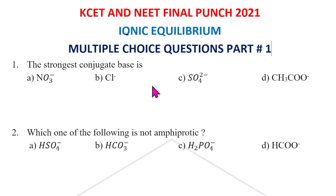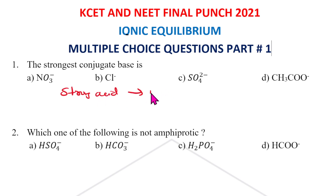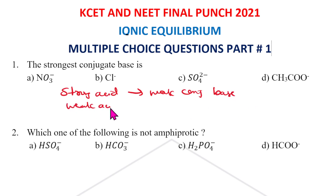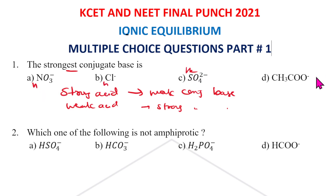First question: which is the strongest conjugate base? Always remember: a strong acid will have a weak conjugate base, and a weak acid will have a strong conjugate base. Examples of strong acids include HNO3, HCl, H2SO4, and weak acids like CH3COOH.